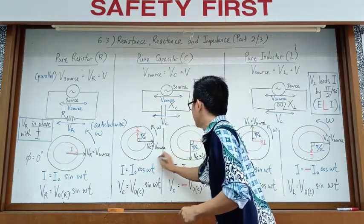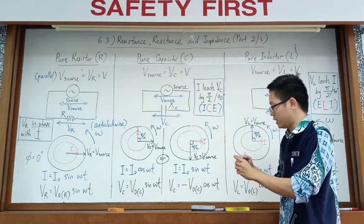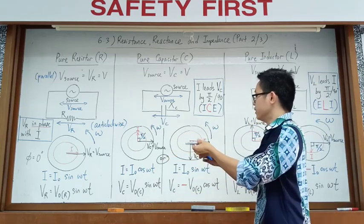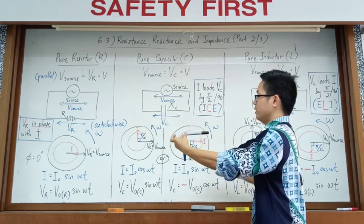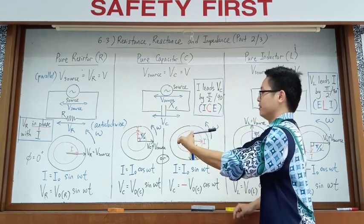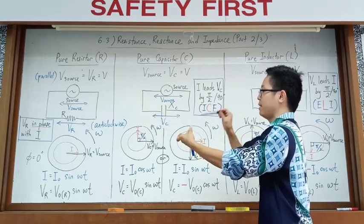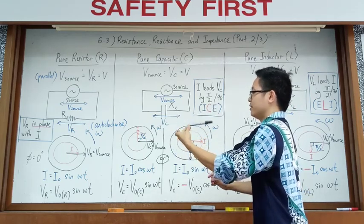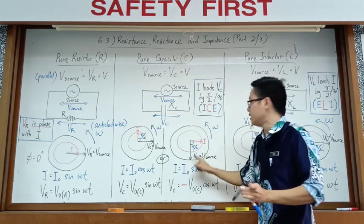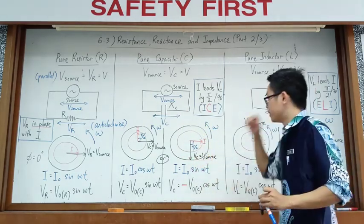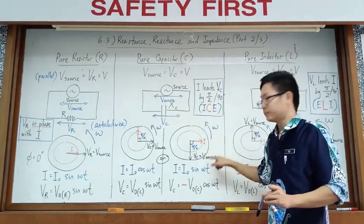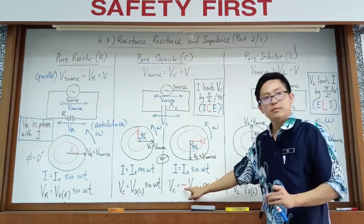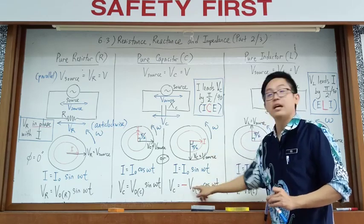This is another situation where current is still leading voltage for a capacitor. Rotation anti-clockwise: the black one is the current, the other is the voltage — current is in front. Current leads voltage by 90 degrees. So if the current is a sine equation, the voltage at the negative y-axis is negative cosine. Negative y means negative cos.